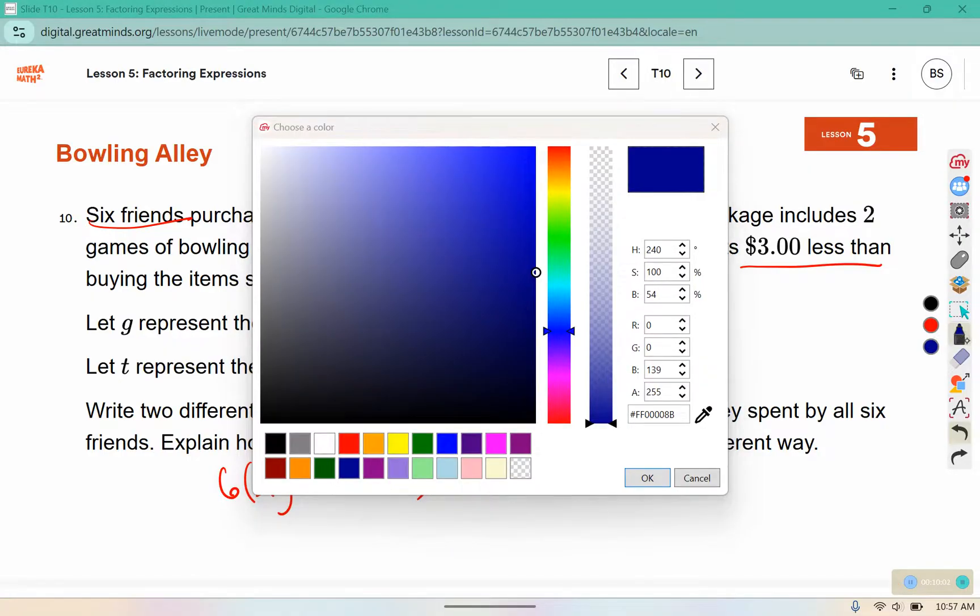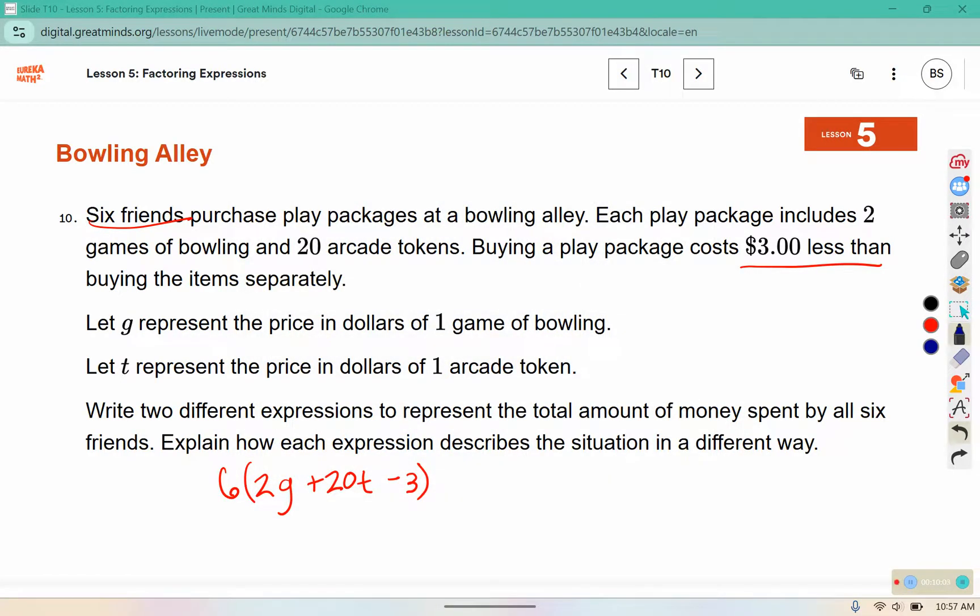Another way that we could think of this is 6 friends playing games of bowling would be 12 games. 6 friends with 20 arcade tokens would be 120 tokens. And 6 friends saving $3 would save $18. So in this red one we're thinking of it as each person gets 2 games, 20 tokens, and saves $3.